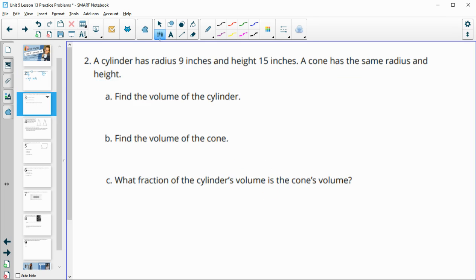Number two gives us a cylinder with a radius of nine inches and a height of fifteen. Then they say we also have a cone that has the same radius and height. Find the volume of the cylinder and then find the volume of the cone. So both of these are going to have the same base area, because both bases are a circle of radius nine.